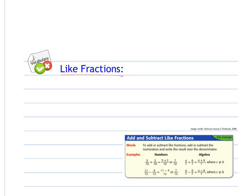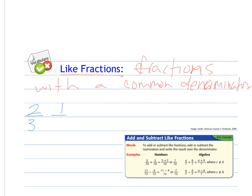Like fractions are fractions that have a common denominator, meaning they have the same denominator. So for example, two-thirds and one-third are like fractions. Four-fifths and three-fifths are like fractions. They have the same denominator.